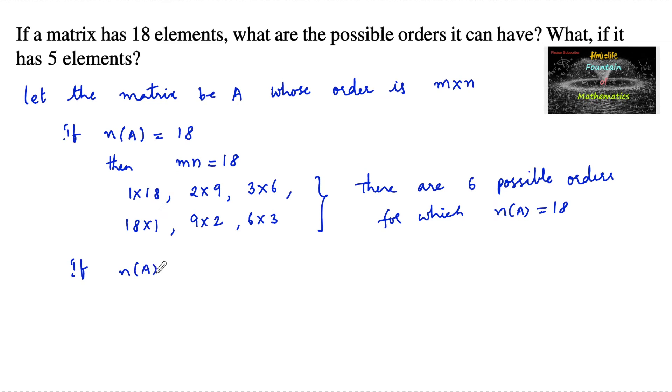The number of ways we can express 5 is 1 into 5 and 5 into 1. So we can say the orders can be taken as 1 by 5 and 5 by 1.